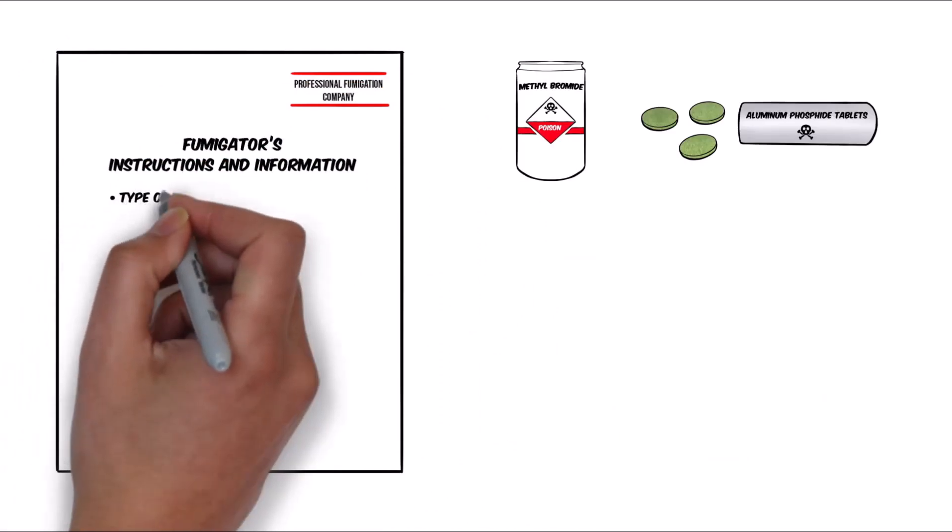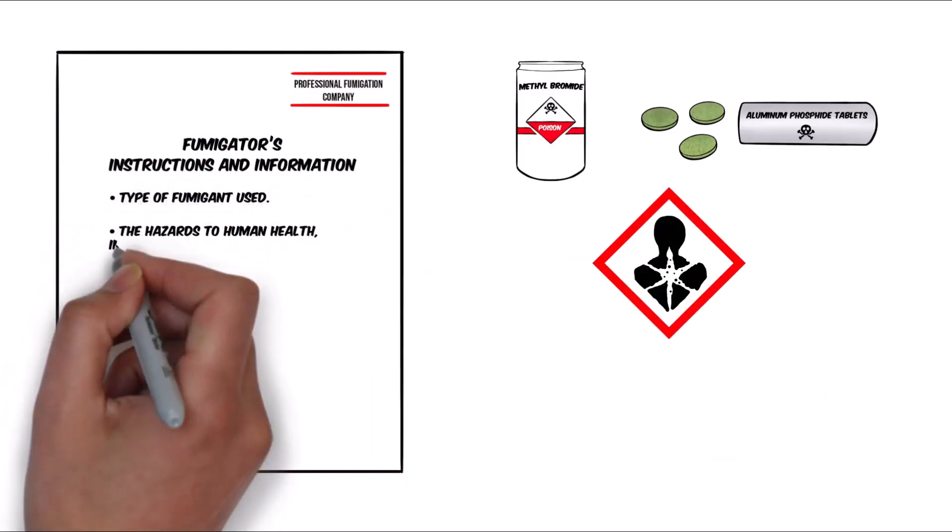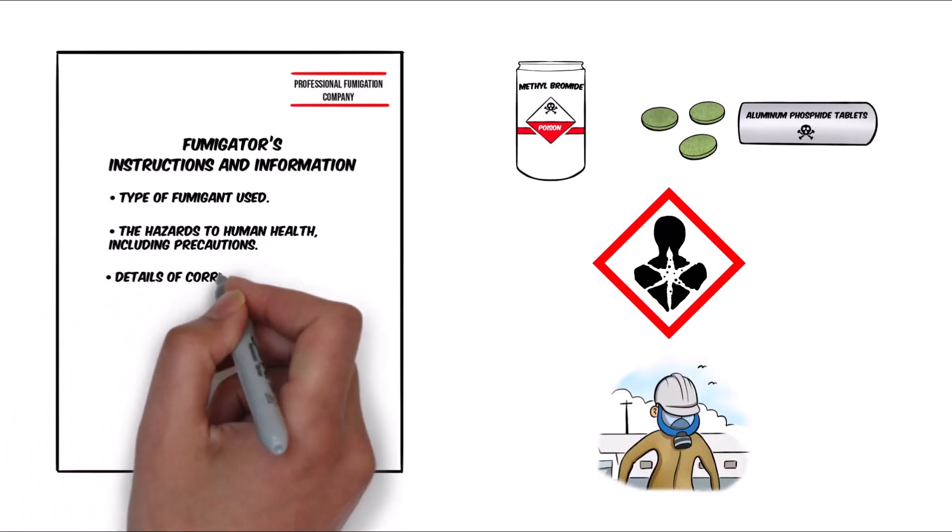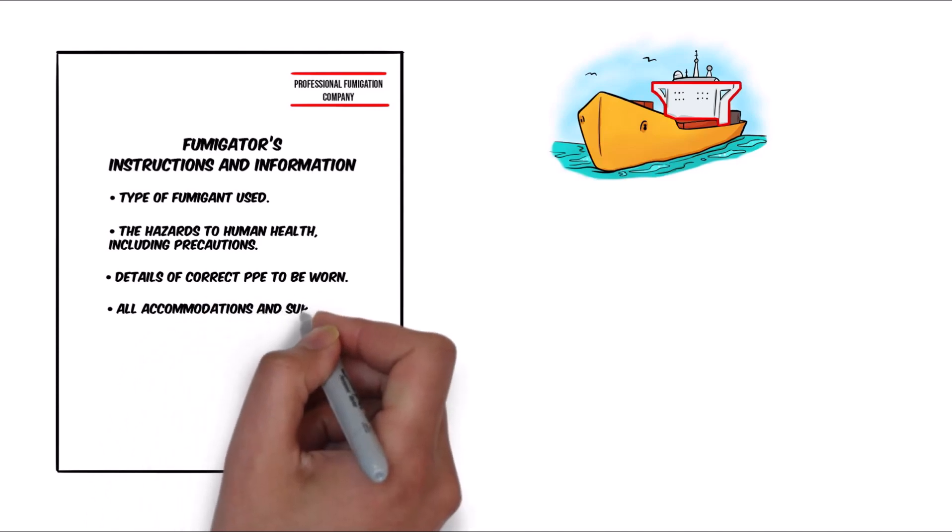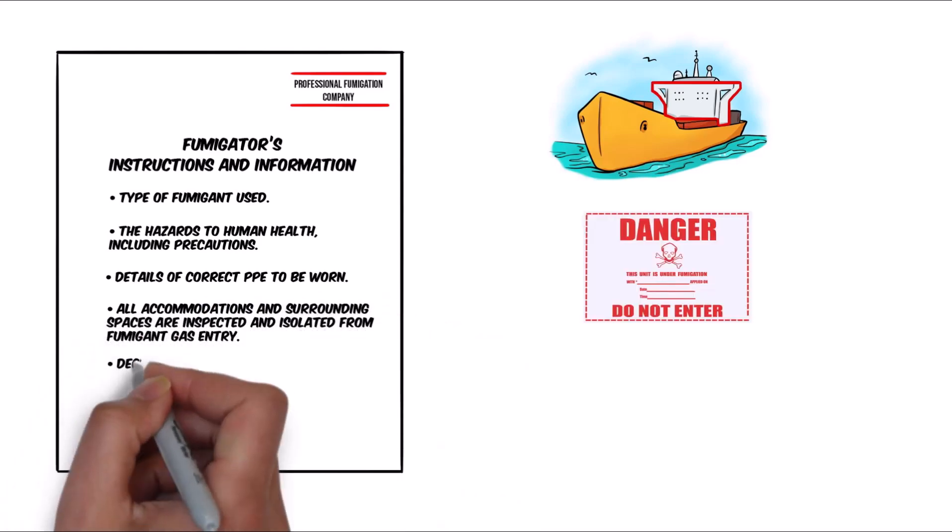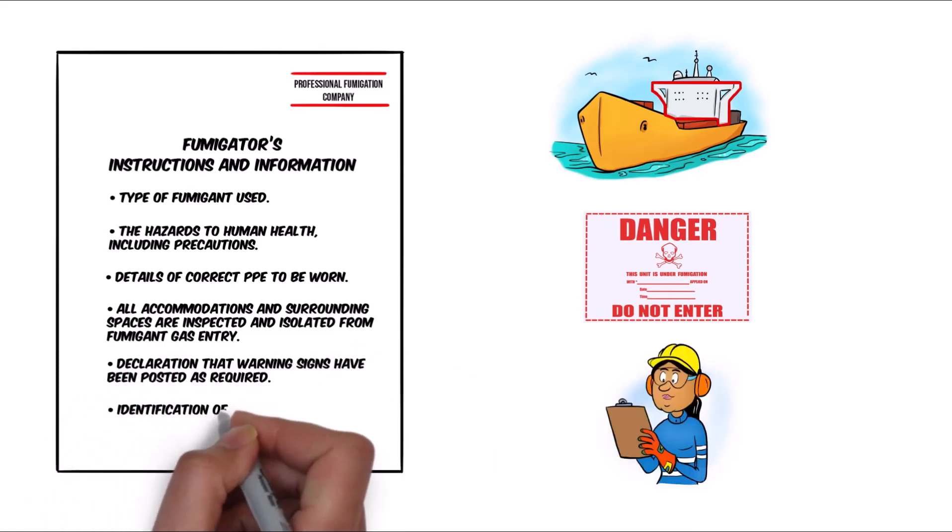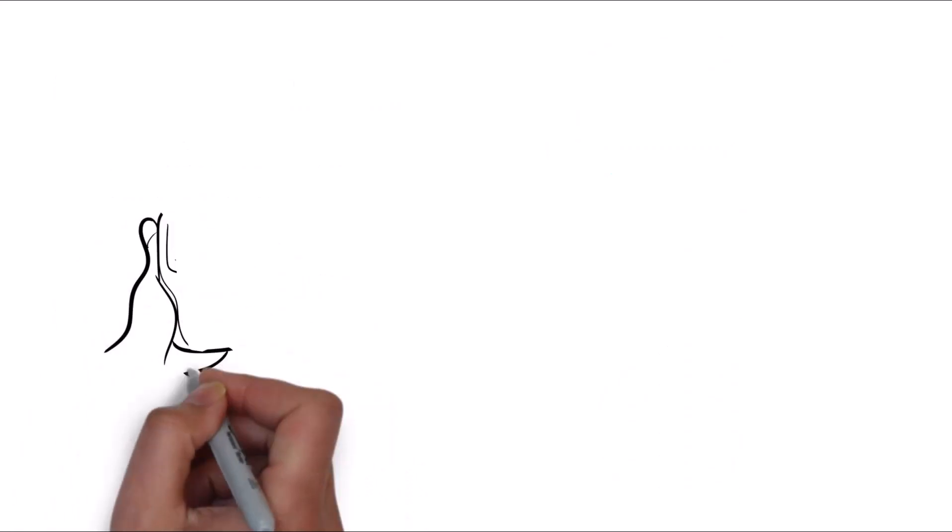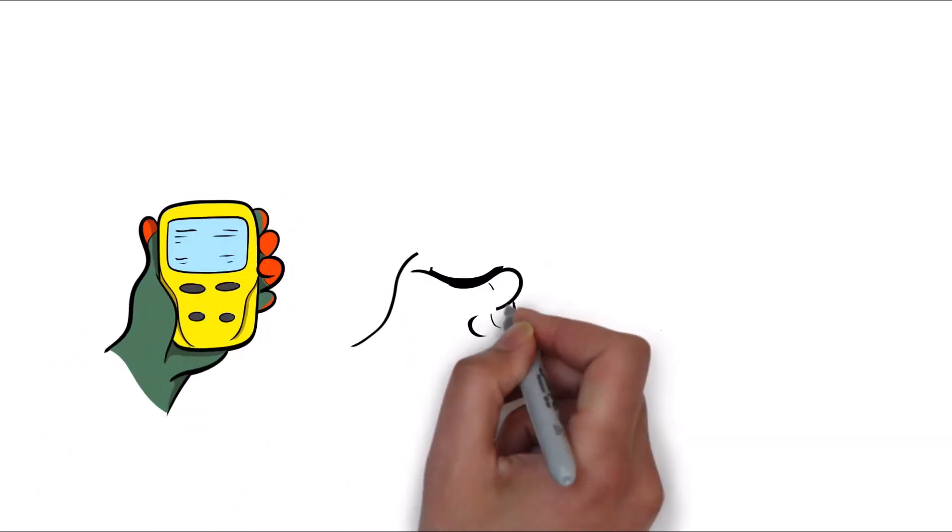This includes type of fumigant used, the hazards to human health including precautions, details of correct PPE to be worn, all accommodation and surrounding spaces are inspected and isolated from fumigant gas entry, declaration that warning signs have been posted as required, and identification of potential hazards and mitigation measures.